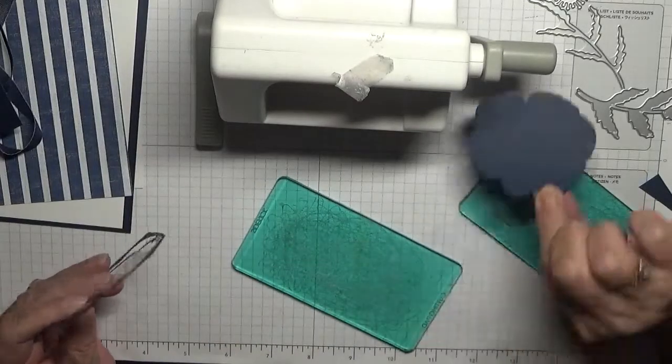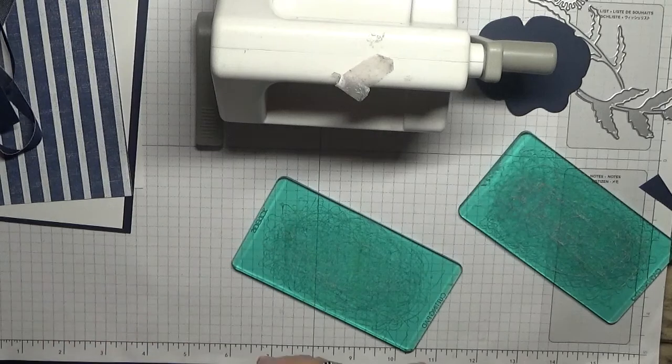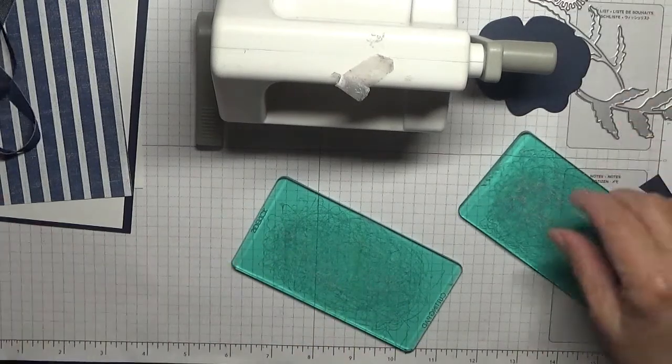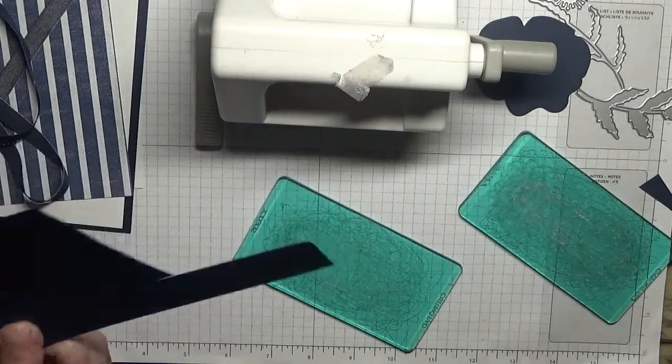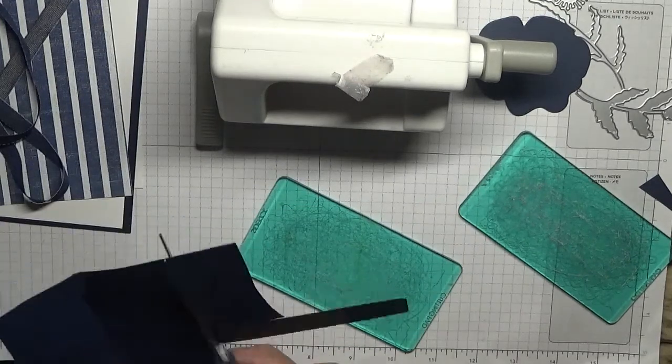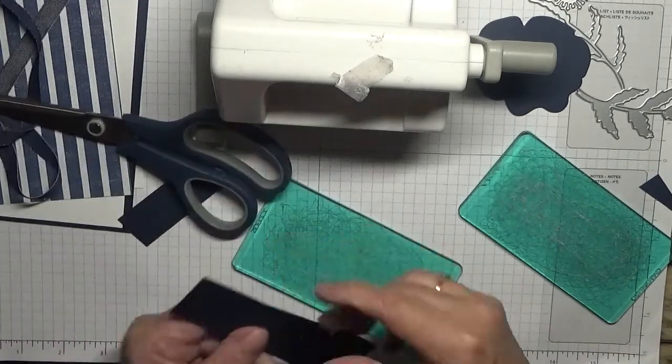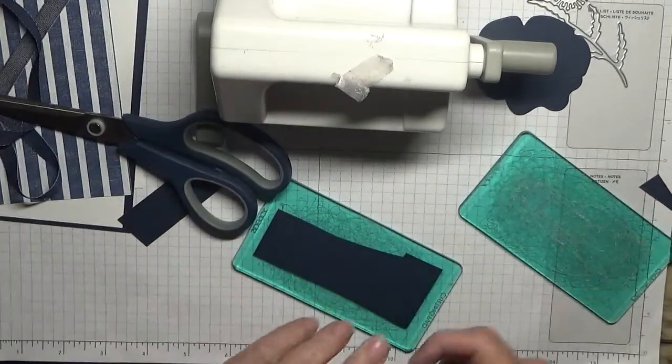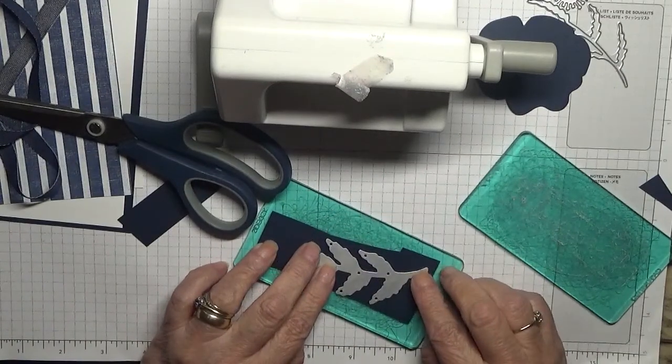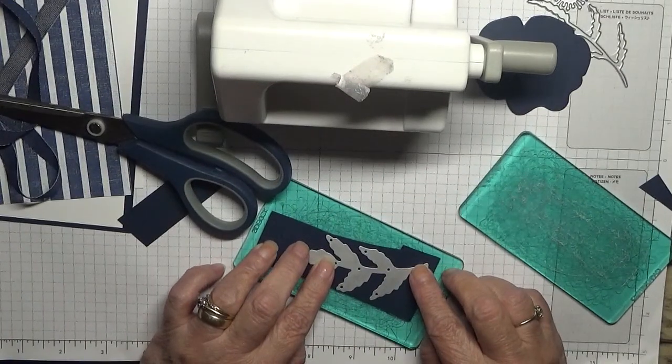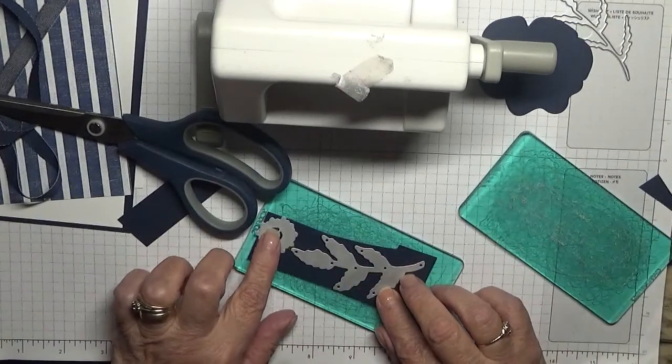Right so those are flower get rid of that don't need that no more we need some scrap for this whole leaf I'm going to put in there and the center piece will that go on there.